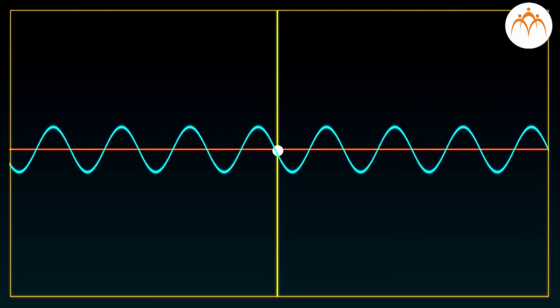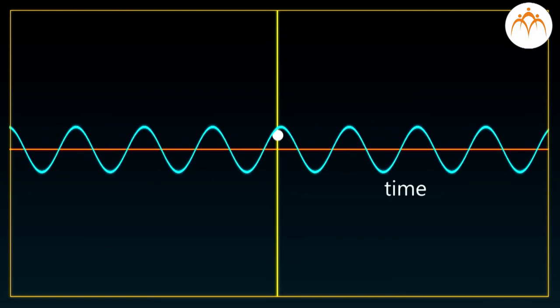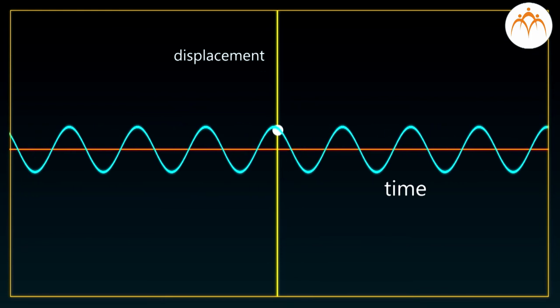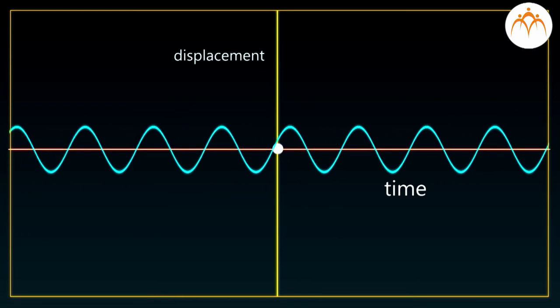The horizontal axis here represents time and the vertical axis represents the displacement of air. The central line represents equilibrium.